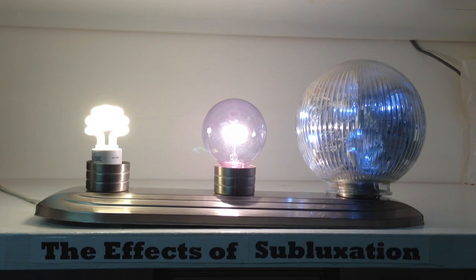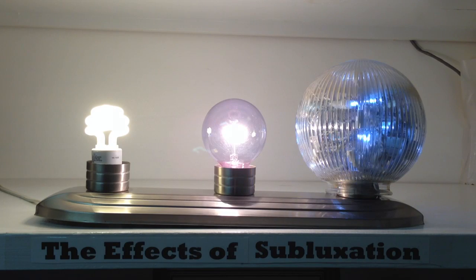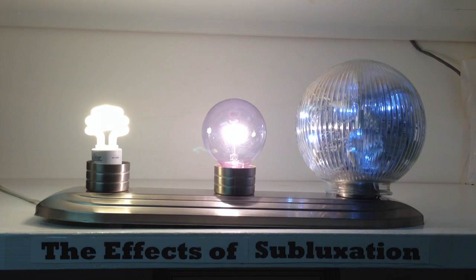Different parts of the body react differently to subluxations. Subluxation is an interference of the nerve system that causes a change in the nerve flow.